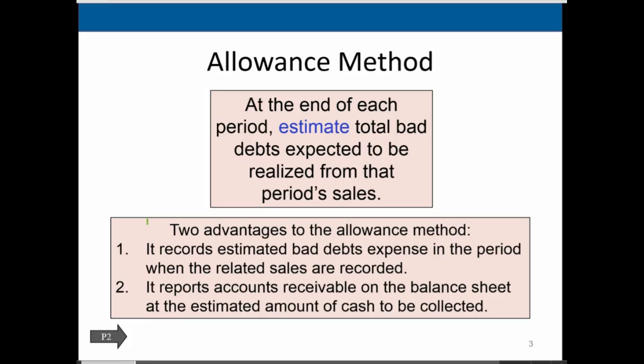There are two advantages to the allowance method over the direct write-off method. First, it recognizes estimated bad debt expense in the period when the related sales are recorded. What we're trying to do is match the expense of the bad debt to the sales that are related to it — that's in accordance with the matching principle. With the direct write-off method, anything in the receivables at year-end won't become bad debt until the following year, meaning the expense is not in the same period as the revenue.